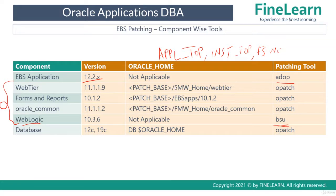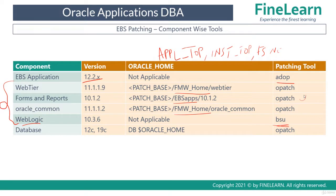Web tier is located in the FMW Home. Forms and reports — that is 1012 — is located in the EBS apps directory. Oracle Common is also located in the FMW Home. If you have any gaps in knowledge related to these, you can look at the file system chapter. So these are the Fusion Middleware components: web tier, forms and reports, Oracle Common, and WebLogic. In Fusion Middleware, OPatch is the main utility, but for WebLogic you have to use BSU.